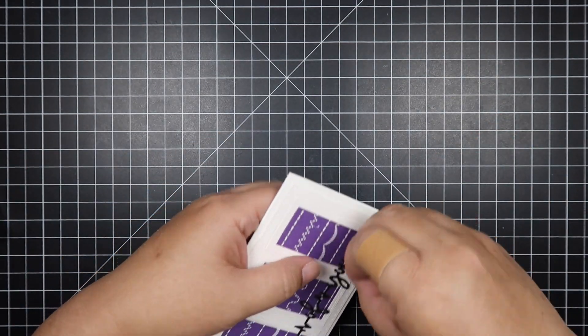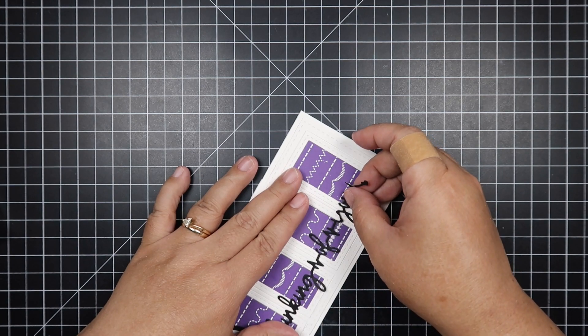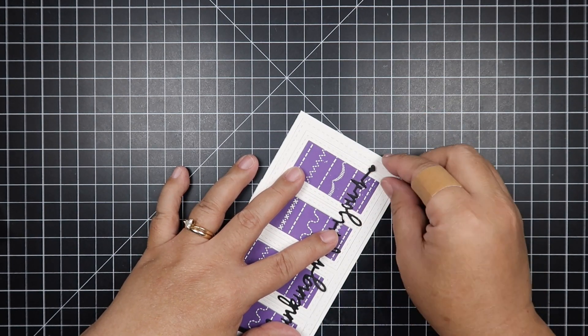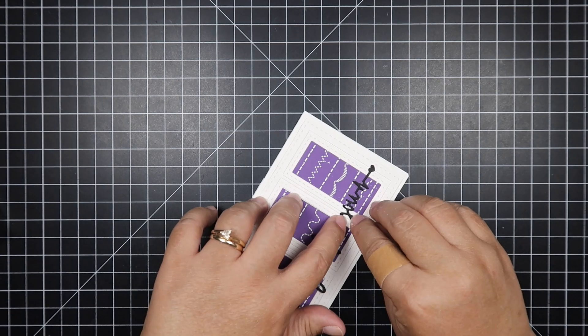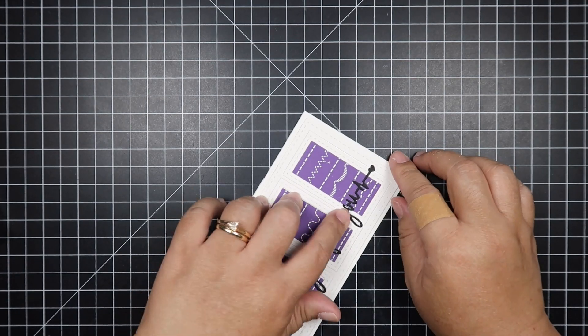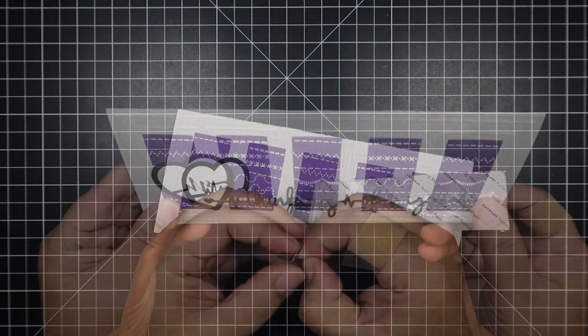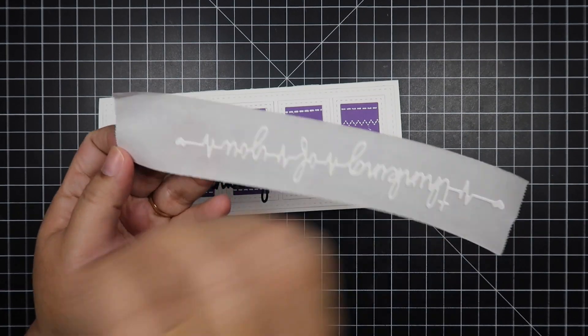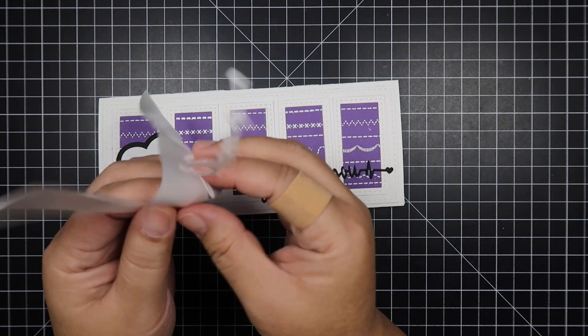Now I'm going to place that right at the bottom, and I'm using my stitch border lines there as kind of a guide to make sure that it is straight going down across. Perfect, I'm happy with how that looks.